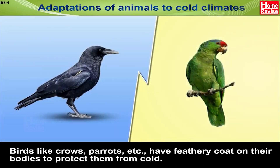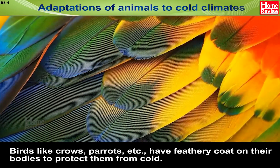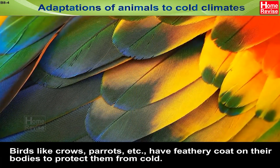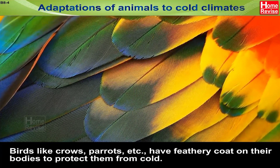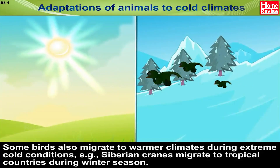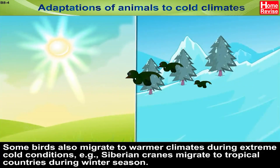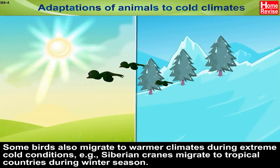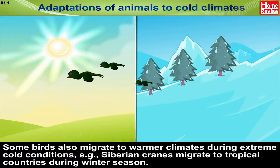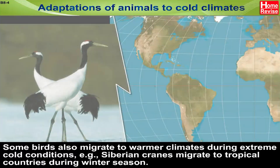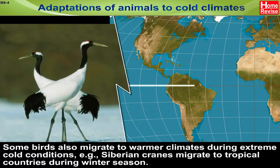Birds like crows, parrots, etc. have a feathery coat on their bodies to protect them from cold. Some birds also migrate to warmer climates during extreme cold conditions. For example, Siberian cranes migrate to tropical countries during winter season.